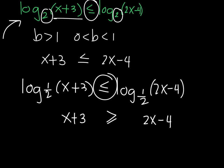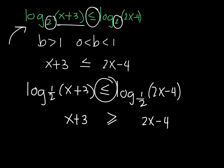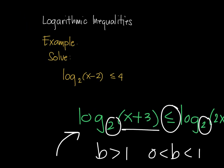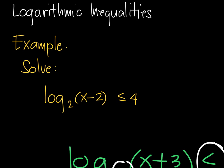So x plus 3 must be greater than or equal to 2x minus 4, and then you solve the resulting inequality for x. At the same time, since these are logarithmic inequalities, there are restrictions: the expressions inside the logs must be positive. These ideas were explained in my other videos. For today, we'll focus on logarithmic inequalities when we have a log on one side and a number on the other side, and the approach is based on the standard method.